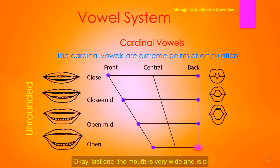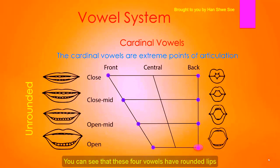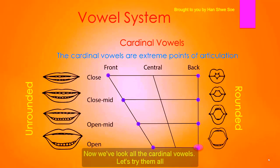The last one has a very wide mouth position and is pronounced 'o.' To compare them all: 'u, o, o, o.' You can see that these four vowels have rounded lips. Now we have to look at all the cardinal vowels — let's try them all.